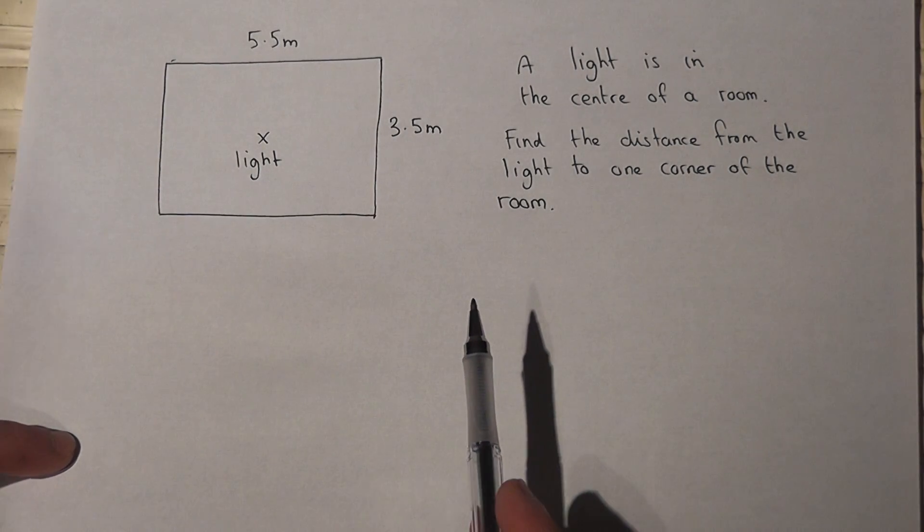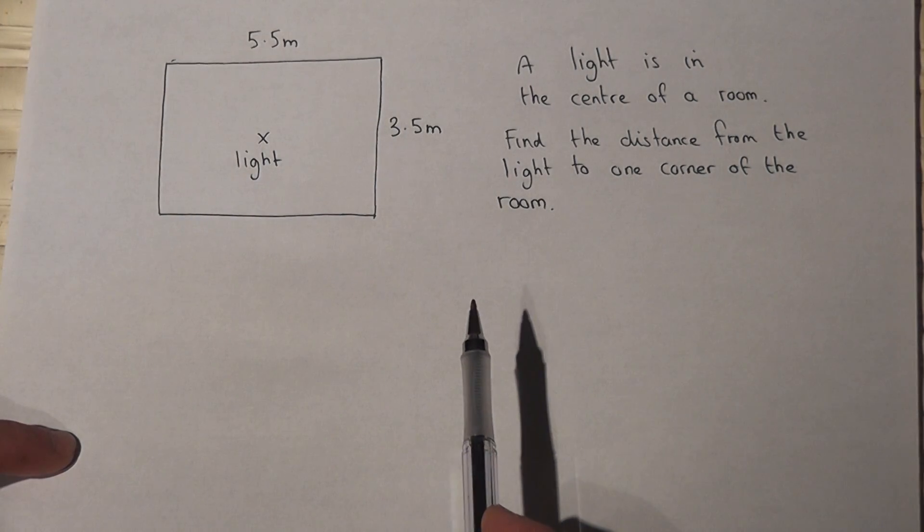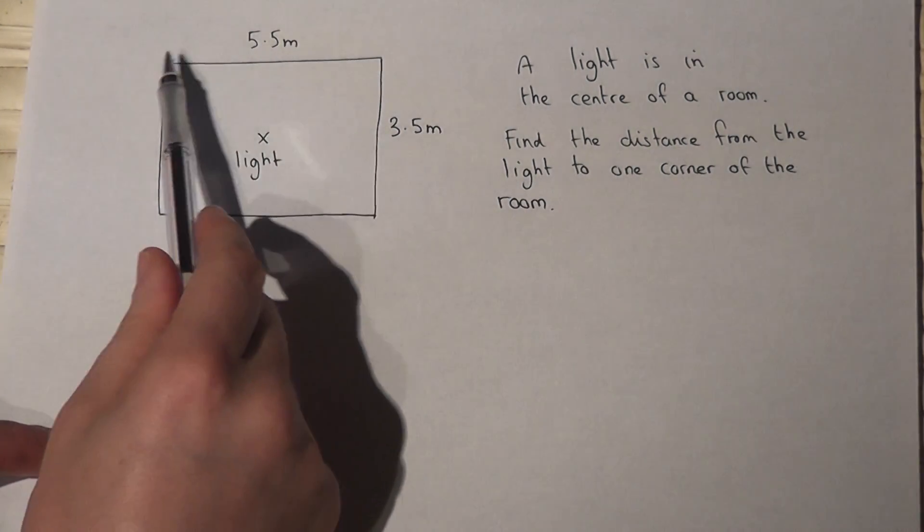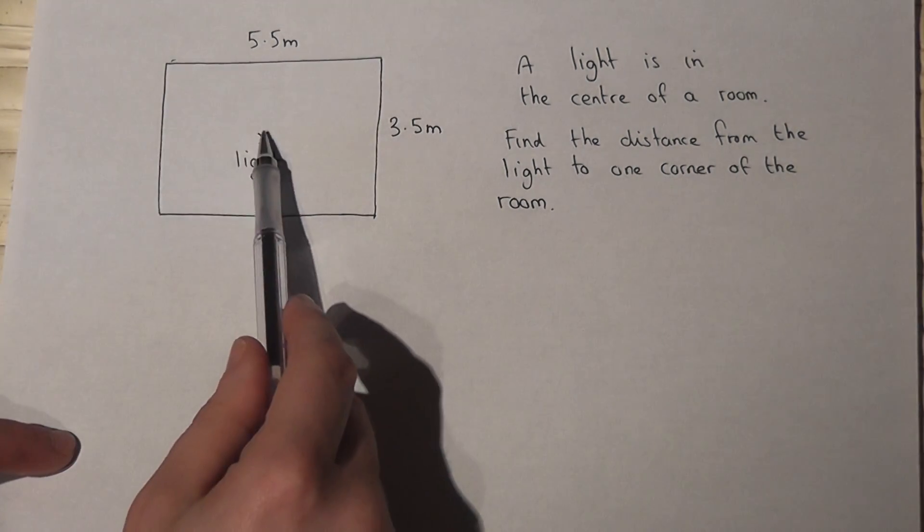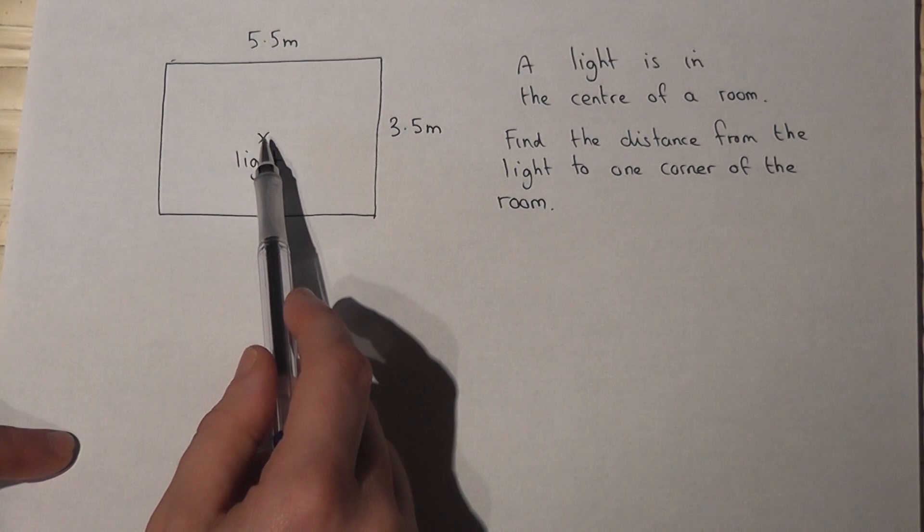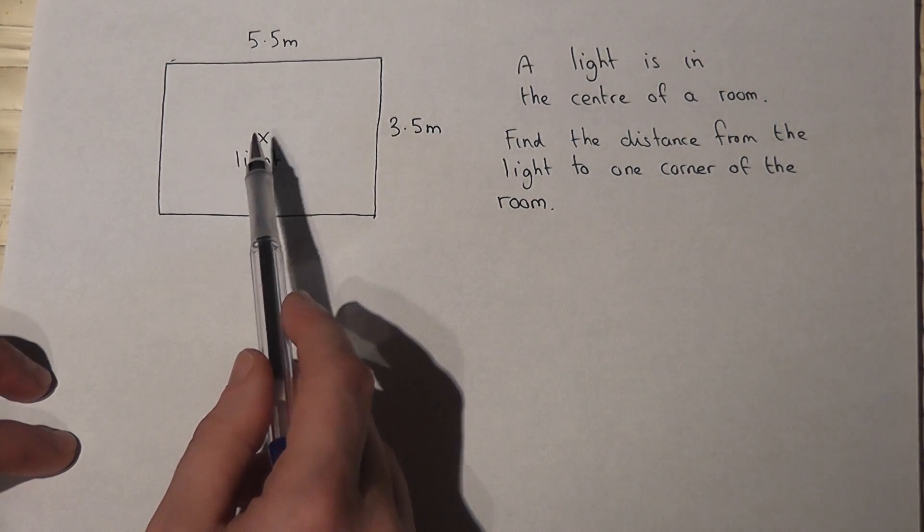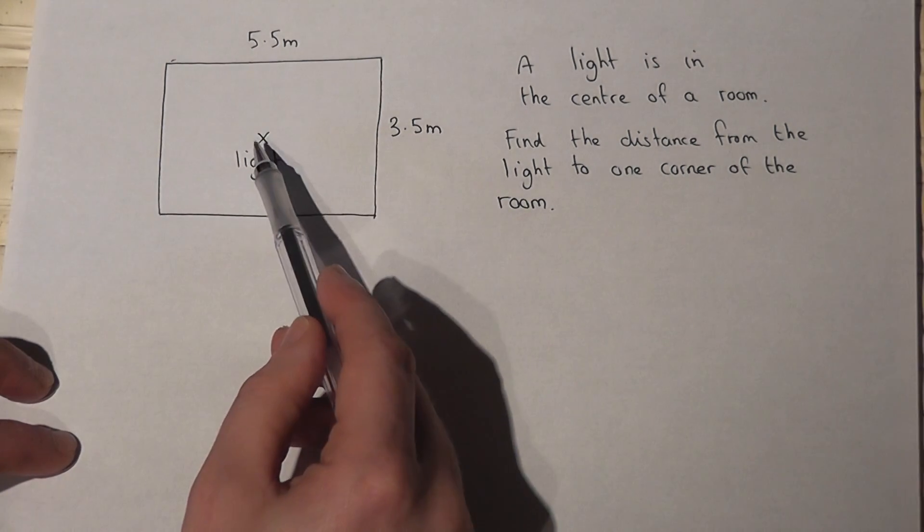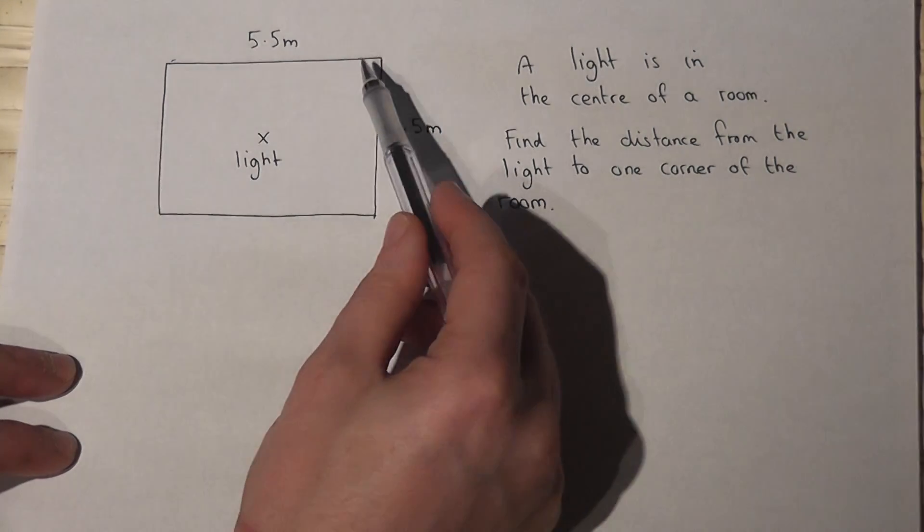This video shows how we can use Pythagoras to solve a problem in context. Now we have a rectangular room and the light is placed in the center of the room, and the question asks for the distance from the center where the light is to one of the corners.